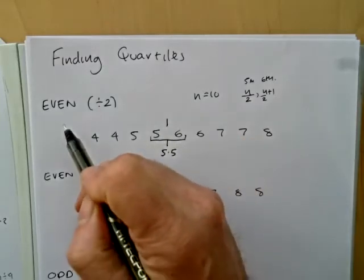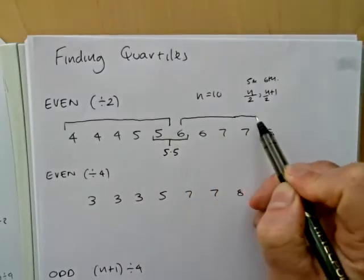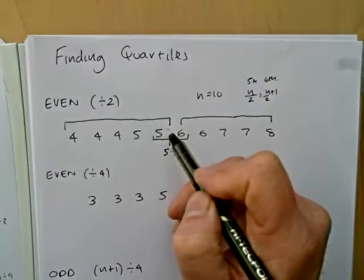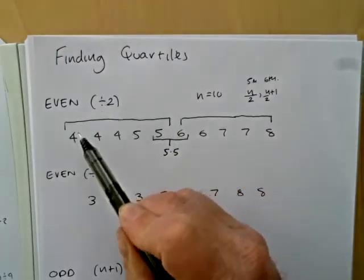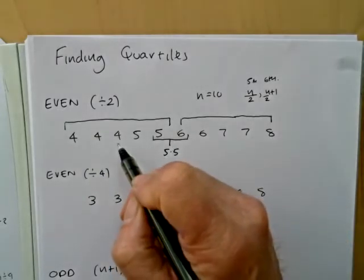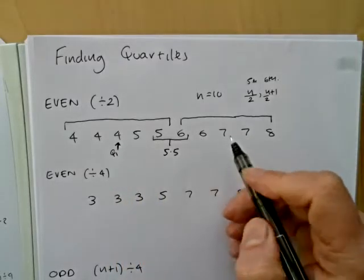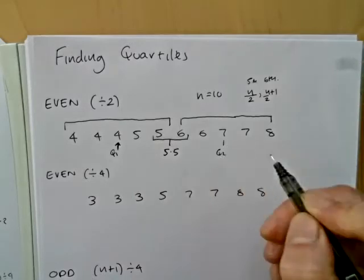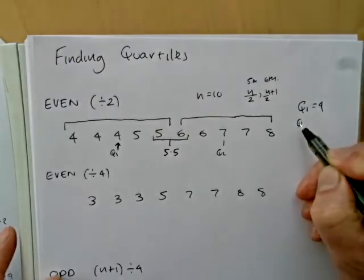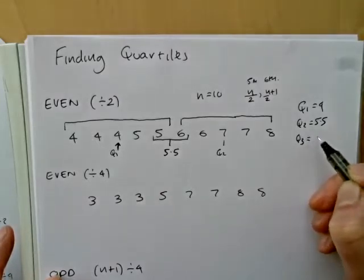So it's the lower and upper quartiles we're going to look at. As I have 5 numbers in each half, I'm finding the median of those numbers. When we divide by 2, we have an odd number of numbers in each pair, so the median will be the middle number. It will be 4 for the lower quartile and 7 for the upper quartile. So the quartiles then: Q1 is 4, Q2 is 5.5, and Q3 is 7.